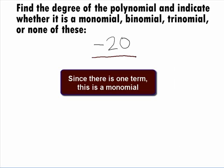Since terms of a polynomial are separated by pluses and minuses, it looks like we have only one term, the negative 20, in this example. This means our answer to the second part of this is this polynomial is a monomial.